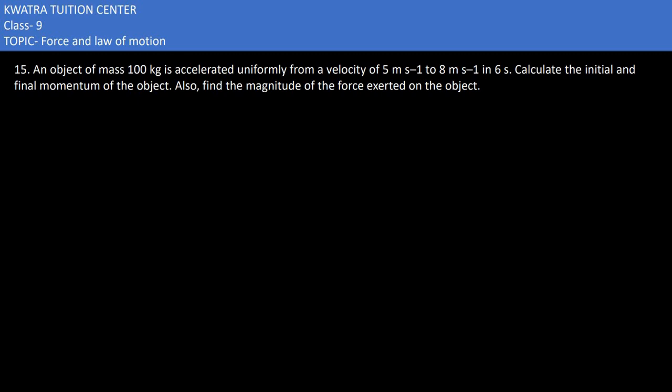Here in the 15th part, it says an object of mass 100 kg is accelerated uniformly from a velocity of 5 meter per second to 8 meter per second in 6 seconds. What is the mass given here? It is 100 kg. What is the initial velocity given? u is given as 5 meter per second, v is given as 8 meter per second.